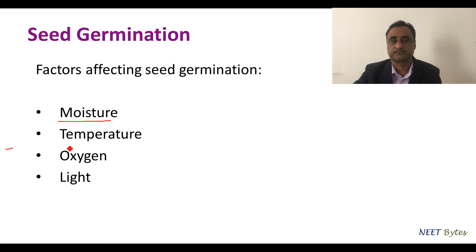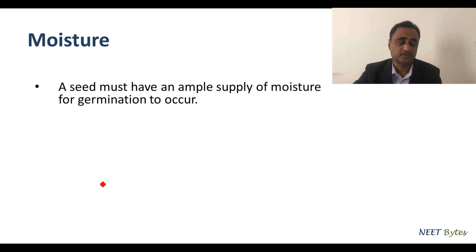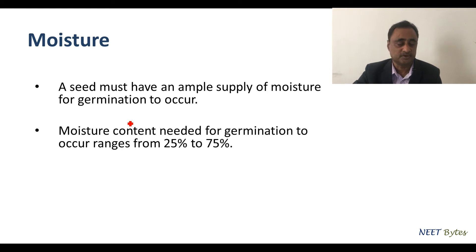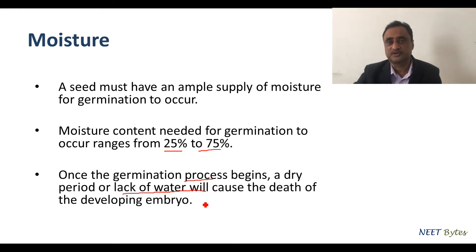First, let's talk about moisture. The seed has to imbibe water during the course of germination, and the moisture content needed for germination ranges from 25 to 75 percent. Once the germination process begins, a dry period or lack of water will cause the death of the developing embryo. So during germination, there should be a constant supply of moisture in order to keep the process going.